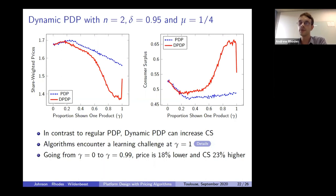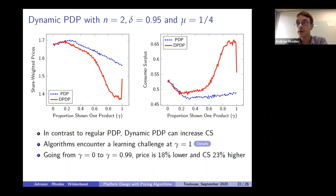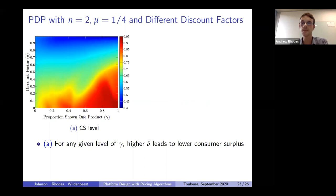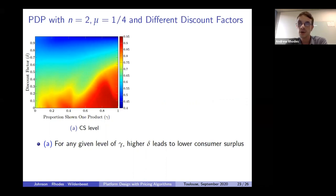To summarize so far: with both PDP and dynamic PDP, although there are some differences from theory predictions, qualitatively the outcomes are not too far from what theory suggested. One more thing to discuss: in the theory model, it was important to distinguish between whether sellers behave competitively or collusively. We also try to get at that in our simulations.